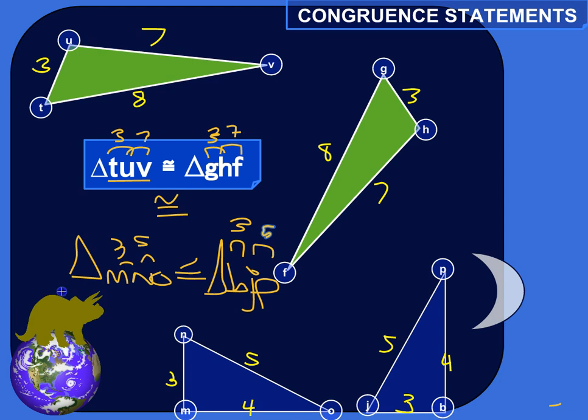All right, so the way you order the names of triangles like this really gives a lot of information. I can look at this and say, well, I know that the segment M to N is congruent to segment B to J just because of the order that the letters are in. I also know that the angle that's formed by, for example, M, N, O corresponds to the angle formed by B, J, P.